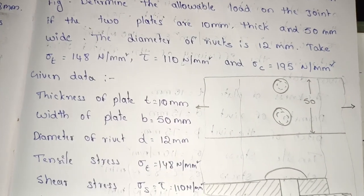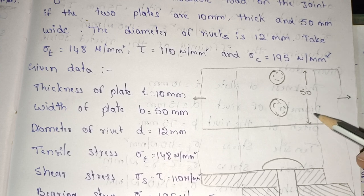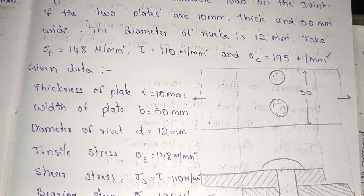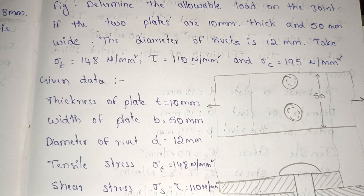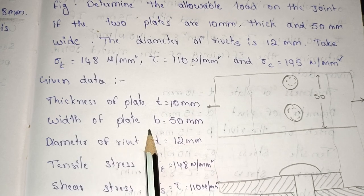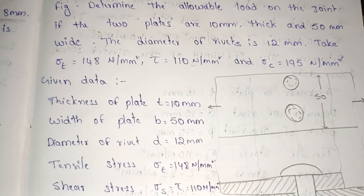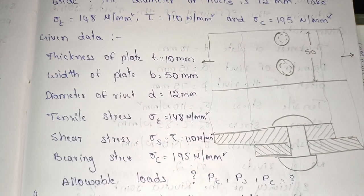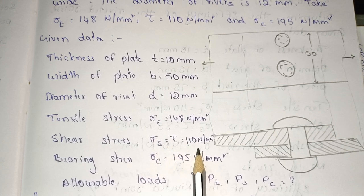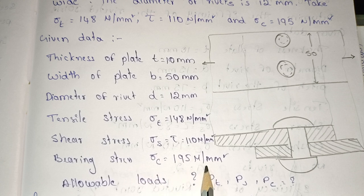So, first write up the given data. Width is 50 mm. Notations: thickness uses small t, diameter uses small d, Sigma T is tensile stress. Write the notation, then the value and units beside it. Given data: thickness of plate t = 10 mm, width of plate b = 50 mm, diameter d = 12 mm, tensile stress Sigma T = 148, shear stress Tau = 110 N per mm squared, bearing stress Sigma C = 195 N per mm squared.